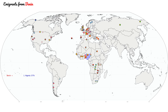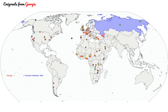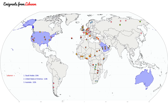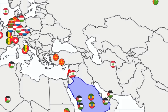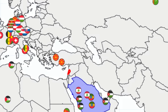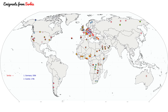Sadly, many people emigrate not of choice but because they are forced to. As we progress through the video we'll find many countries ravaged by war. Lebanon, which saw a gruesome 15-year civil war from the 70s to the 90s, is one such example. Serbia is another.